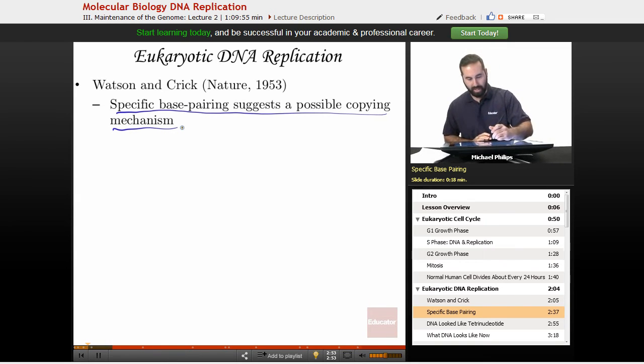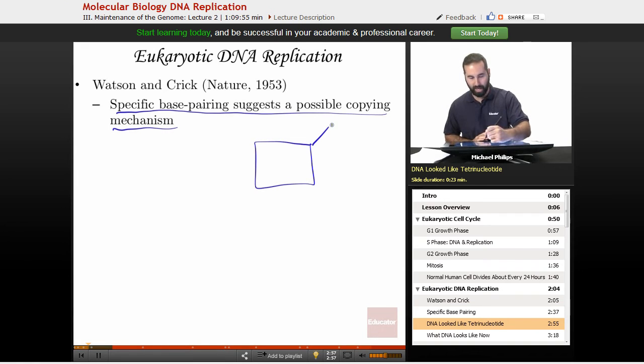At the time, DNA looked like a tetranucleotide with the bases coming off on the ends, the phosphate backbone being in the middle. So this would be the phosphate backbone.